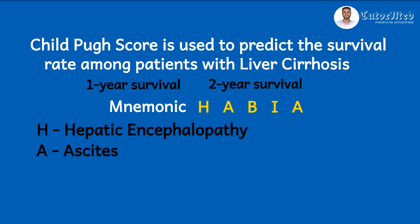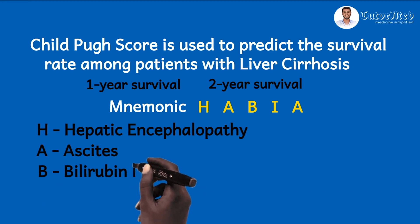A stands for Ascites: is there ascites or not? If there is, what is the grade — is it moderate or gross? There is a score or point for it. Then B stands for the total Bilirubin level, and there is a score for that as well.